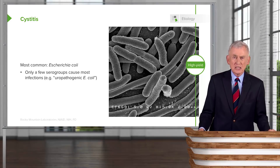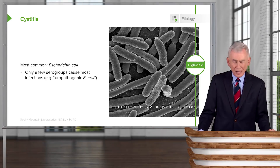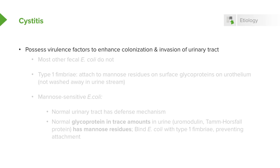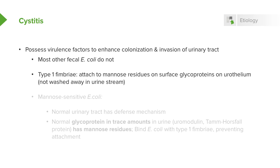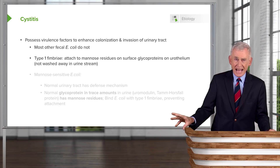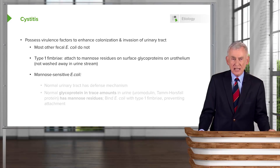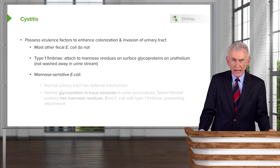We have lots of E. coli in our intestine, but only about 20% of these are what we call uropathogenic E. coli. These E. coli are different — they possess virulence factors that allow them to colonize and invade the urinary tract. Most of them have what we call type 1 fimbriae, a fringe around the surface that can attach to mannose residues found on glycoproteins on urothelium, so they are not washed away in the urinary stream. These are called mannose-sensitive E. coli, and the other E. coli don't have them.